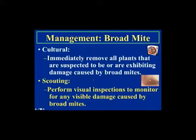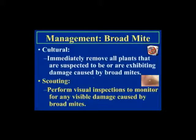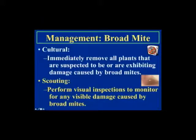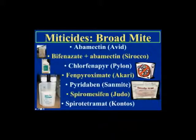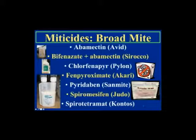For broad mite management: once damage is evident, it's really too late. Immediately remove plants showing symptoms and also those surrounding them, since neighboring plants are likely also infested even if not yet showing symptoms. Miticides available include Avid, Sirocco, Pylon, Judo, and Kontos, which have translaminar activity — these are most likely to be successful because they penetrate to where broad mites are feeding. Read the label, as some products cannot be used on poinsettias when they're in bract.